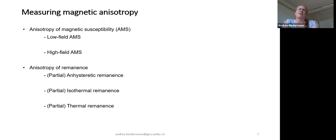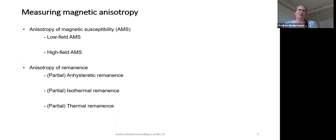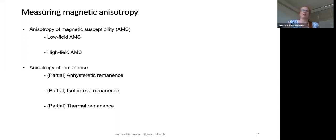We could also measure susceptibility anisotropy in high fields, which takes around one to one-and-a-half hours per sample, but allows us to separate the magnetic anisotropy carried by paramagnetic minerals from that of ferromagnetic minerals. If we're interested in ferromagnetic minerals, that's one method to apply. Then there's a whole group of remanence anisotropy methods. With all of these, the principle is the same: we apply a remanence in a known field direction and intensity, and then measure what the sample has acquired.